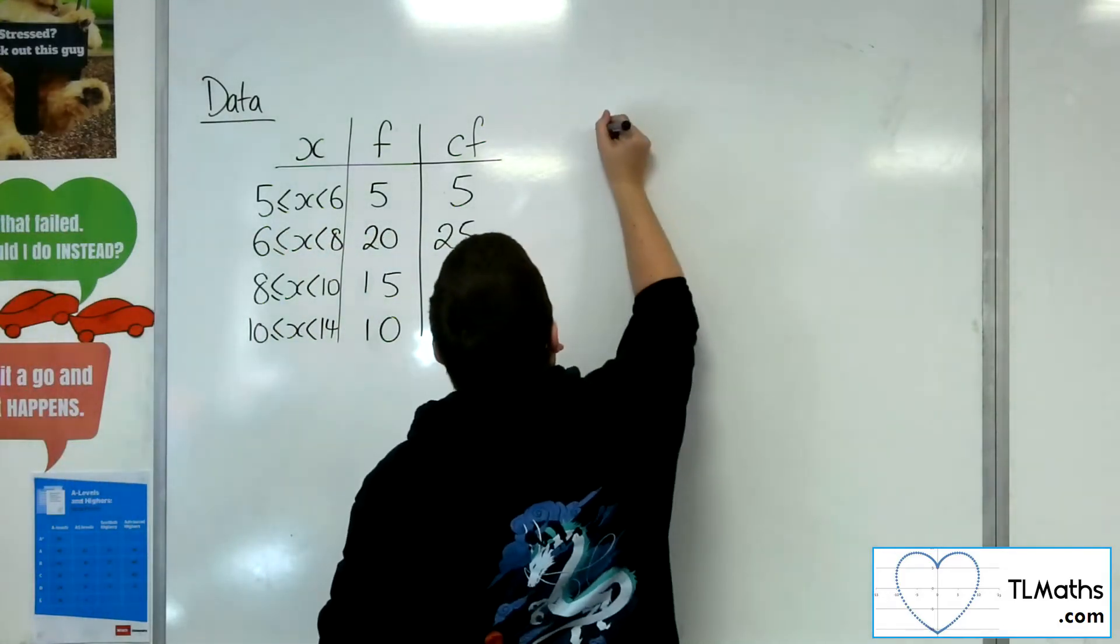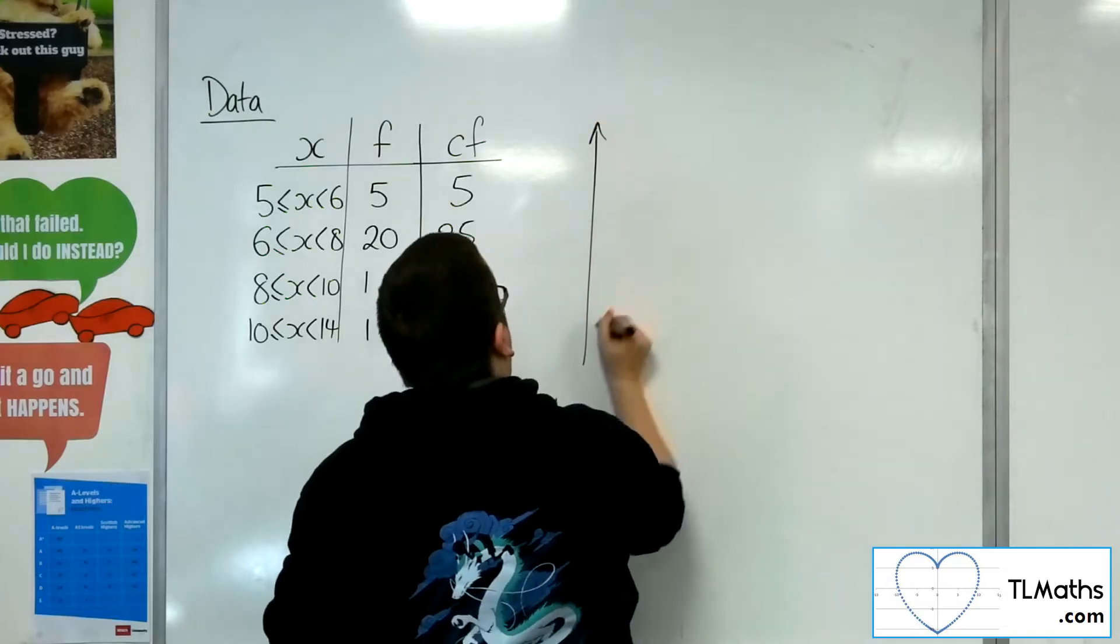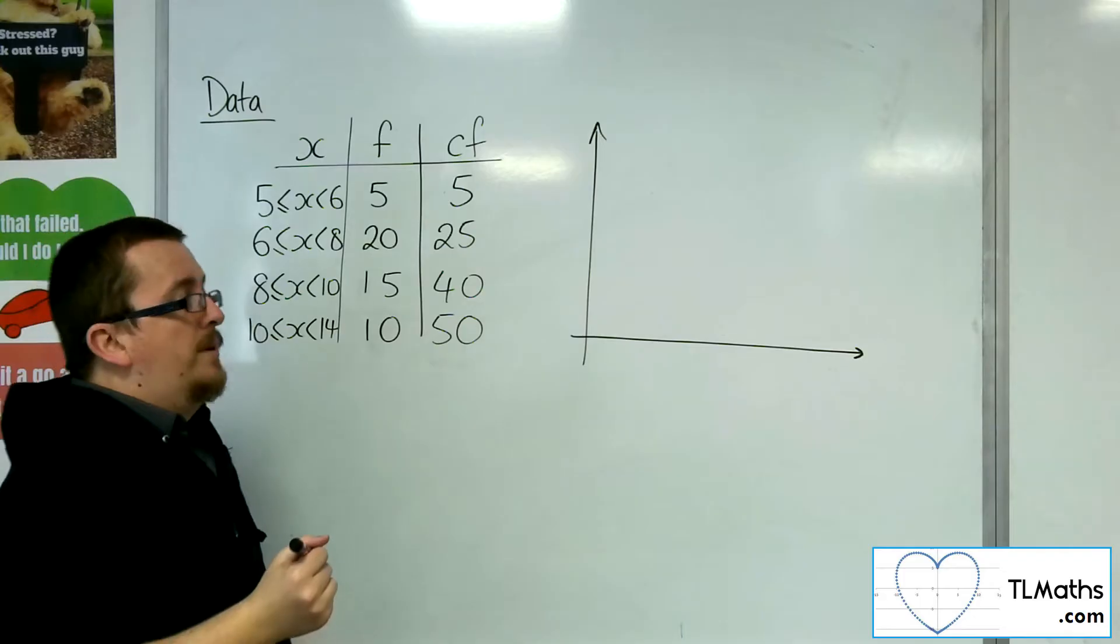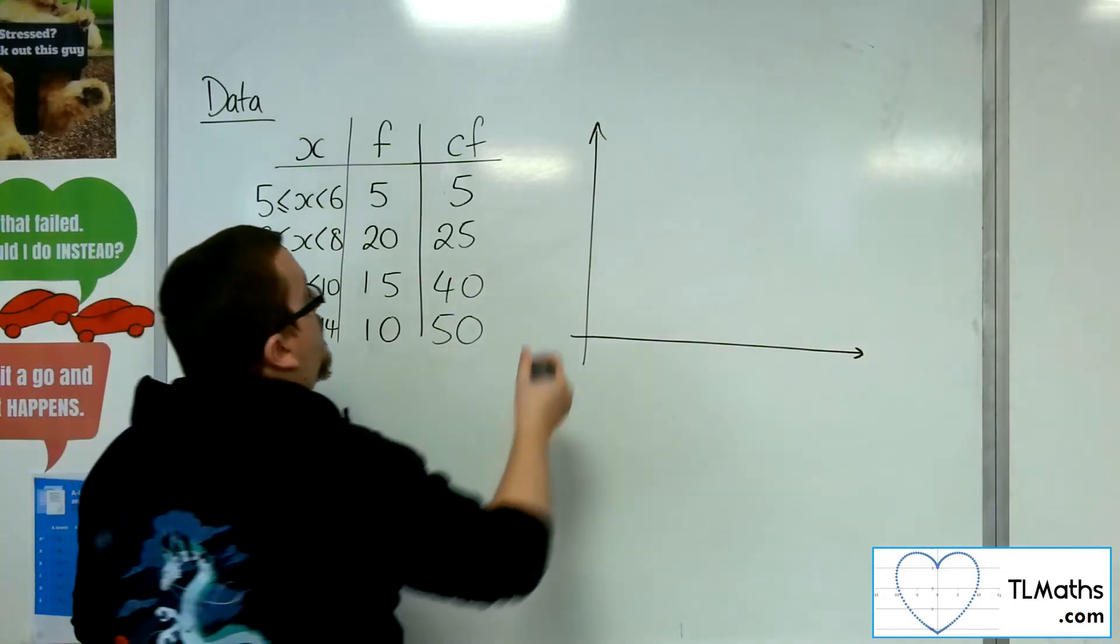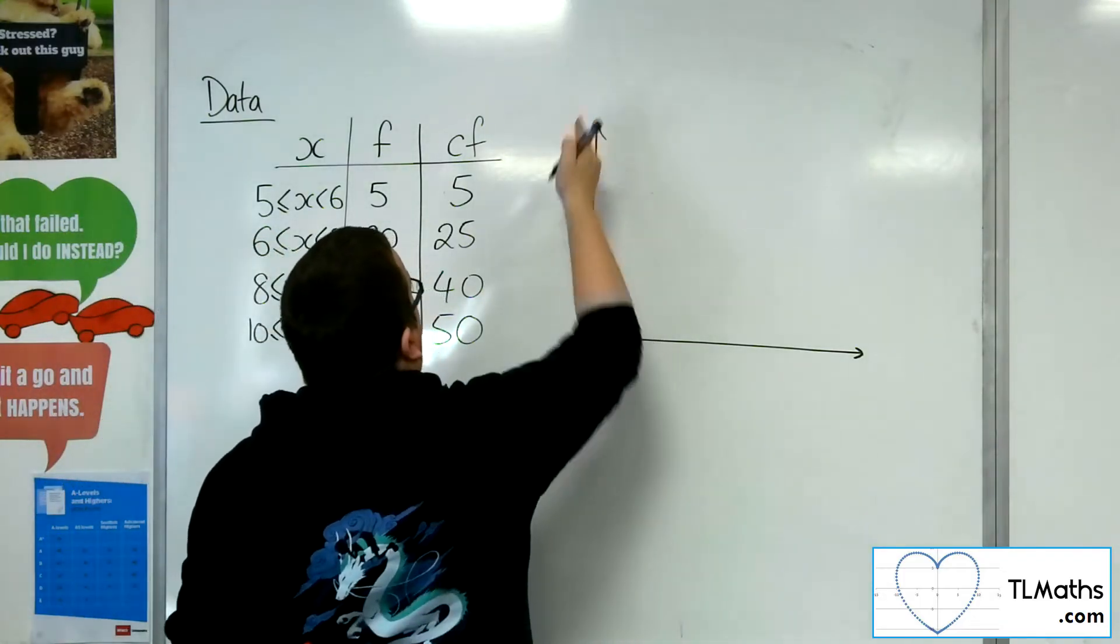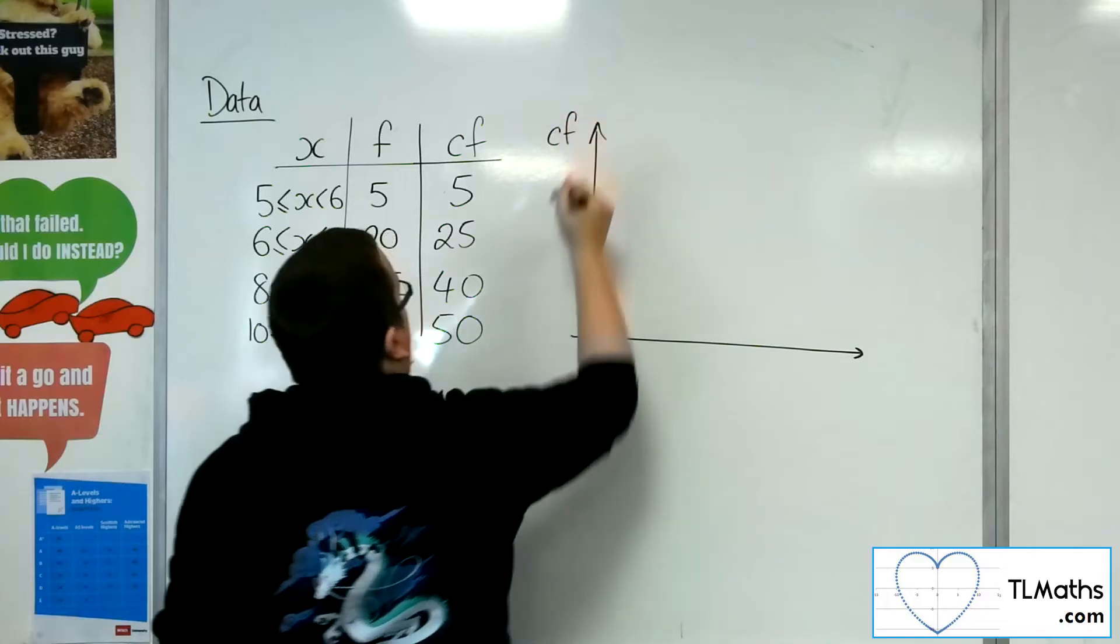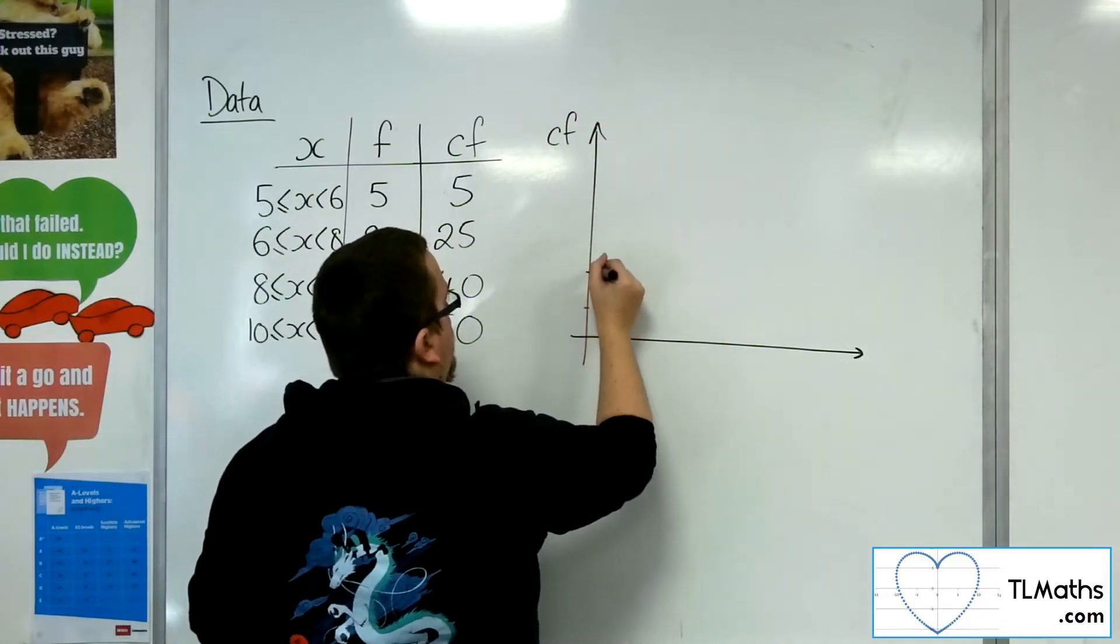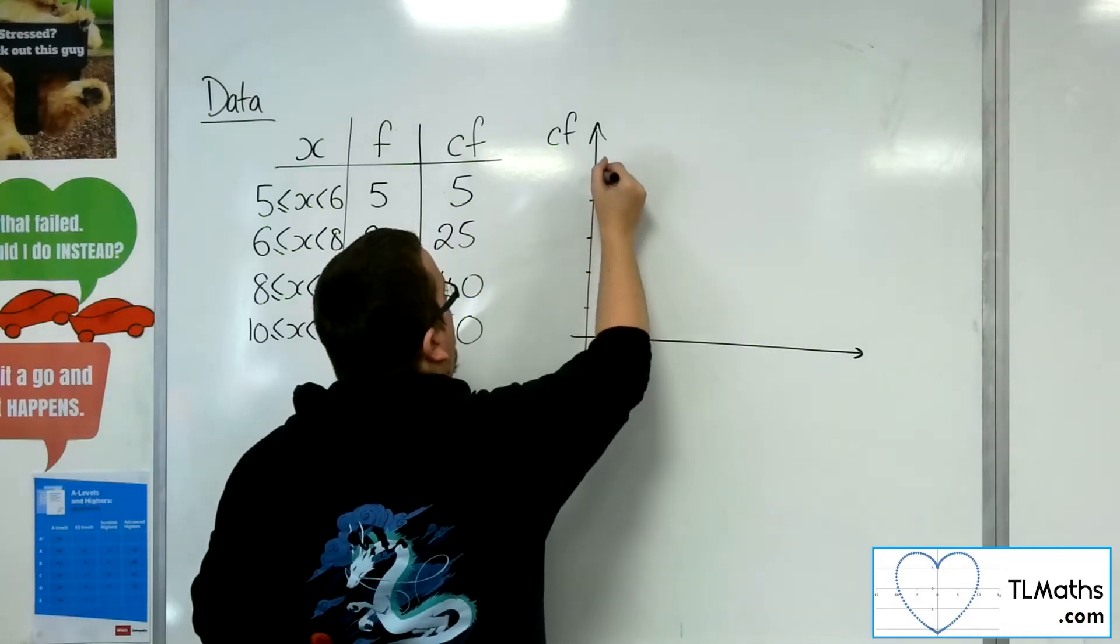So, when you plot your data and you plot your cumulative frequency curve, the left-hand vertical axis will be the cumulative frequency. So, that's going up to 50. So, let's say 10, 20, 30, 40, 50, 0.